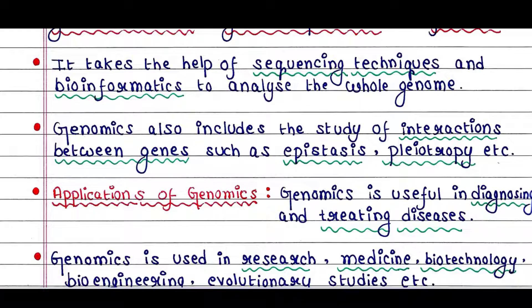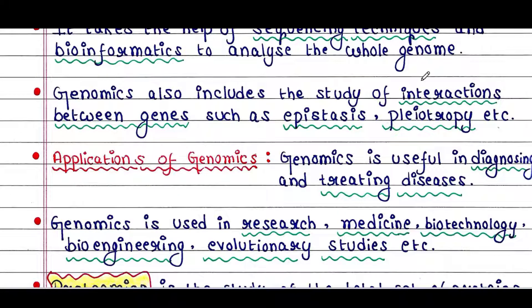Genomics also includes the study of interactions between genes such as epistasis and pleiotropy. Genomics is useful in diagnosing and treating diseases — using genomics we can compare the genome of a healthy and a diseased individual. Genomics is useful in research, medicine, biotechnology, bioengineering, evolutionary studies, etc.